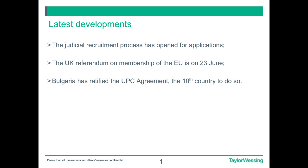We also don't know if any of those judges will be from the UK, because it will all seem to depend on the results of the UK referendum on membership of the EU, which takes place next Thursday, 23rd of June — exactly one week away. If there is a vote in favour of Brexit, we'll discuss the likely effect in our next webinar. For now, I'll just say that the UPC Agreement has just received its tenth ratification from Bulgaria, meaning that only ratification from the UK, Germany, and one other member state is now required to bring the UPC into force.